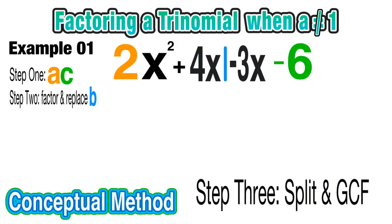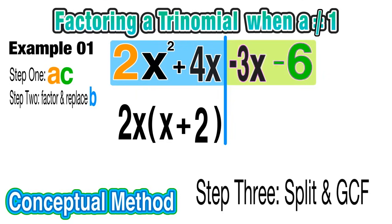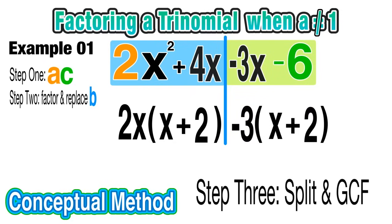Our third step is to split and find the GCF. We're going to split this thing right down the middle, in between the two terms that we just added. So now we have a left side and a right side. From here we want to pull out a GCF from each side. On the left side, the GCF is 2x. When I pull 2x out of 2x² I'm left with x, and when I pull 2x out of positive 4x I'm left with positive 2. Now I do the same thing on the right side. I pull a GCF from -3x-6, that common factor is -3. When I pull -3 from -3x I'm left with just x, and when I pull -3 from -6 I'm left with positive 2.